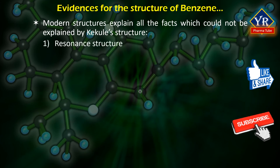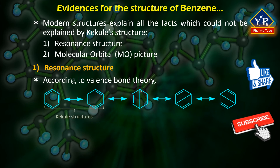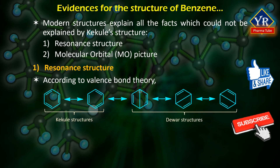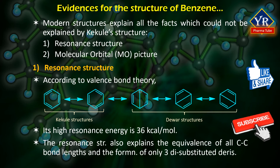These include the resonance structure and the molecular orbital picture. According to valence bond theory, benzene is considered to be a resonance hybrid of two Kekule and three Dewar structures, with the Kekule structures making the major contributions. Since a resonance hybrid is always more stable than any contributing structure, benzene is more stable than expected, as shown by its high resonance energy of 36 kcal/mol. The resonance structure also explains the equivalence of all C-C bond lengths and the formation of only three disubstituted derivatives.